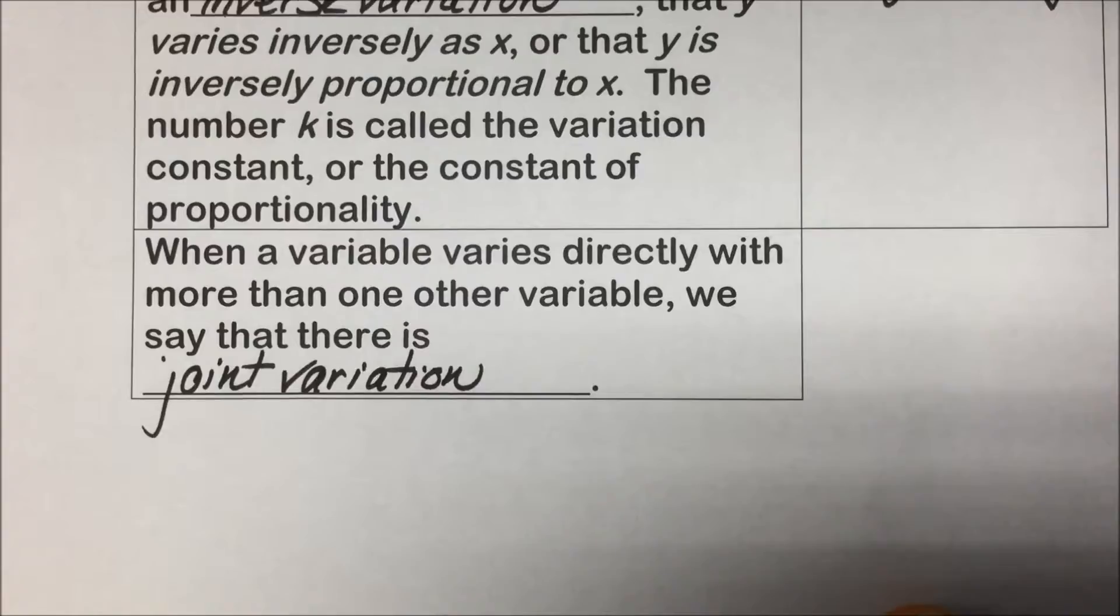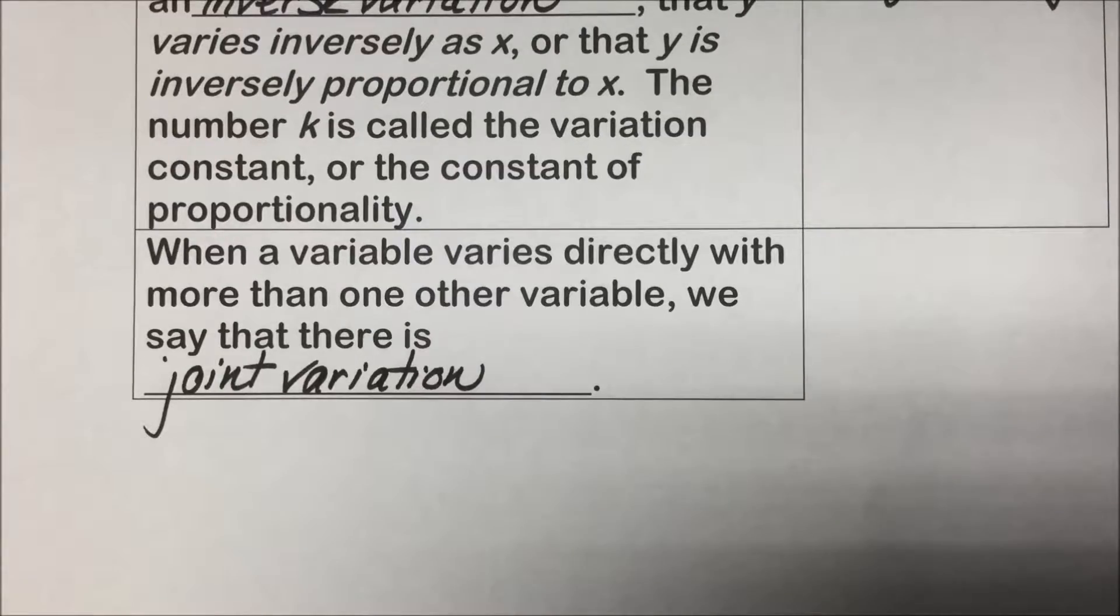An example of that might be the formula for the area of a triangle with the base and the height. In words that would mean the area varies jointly with the base and the height.